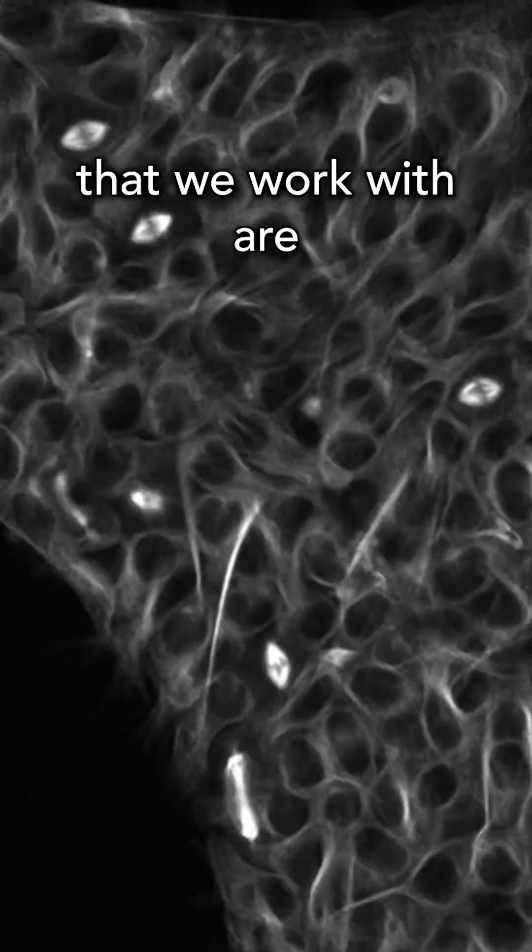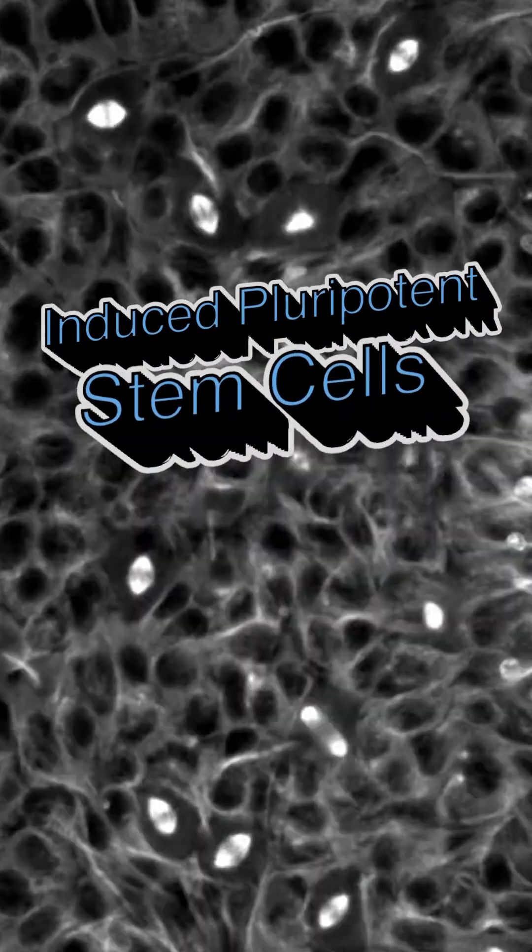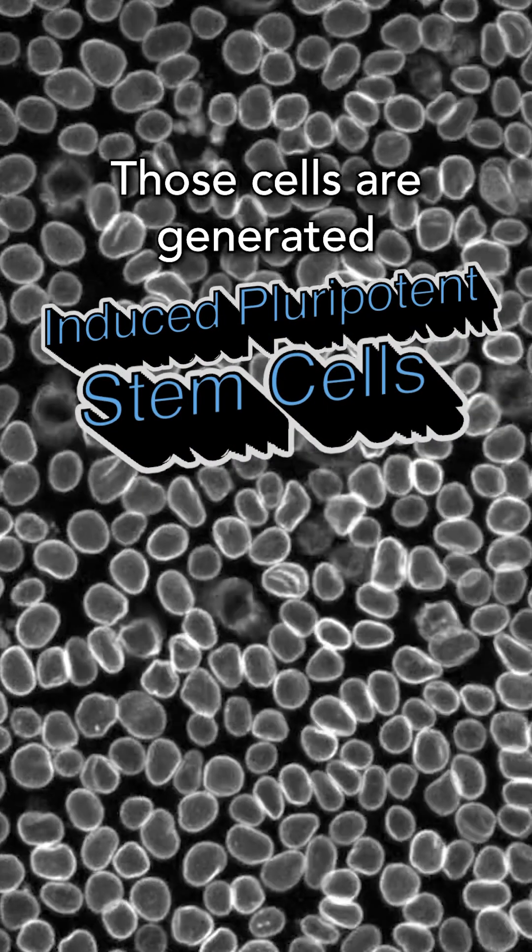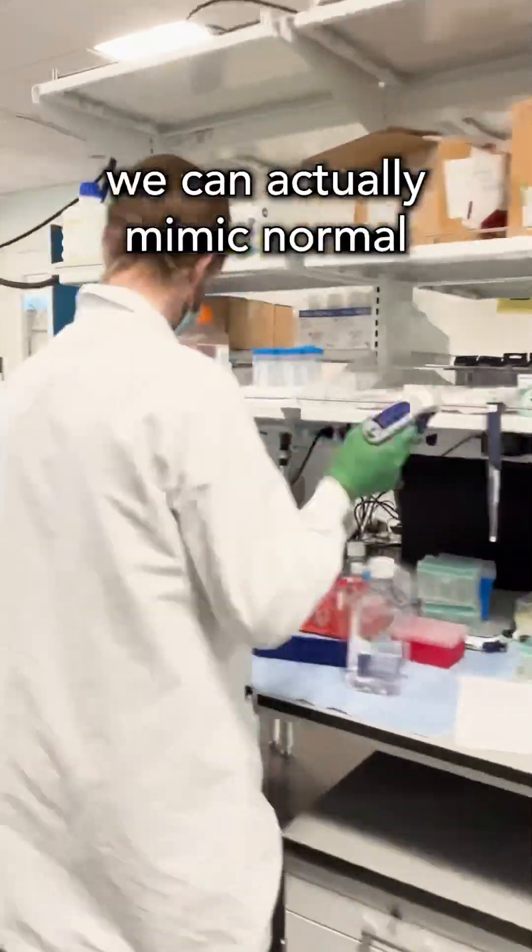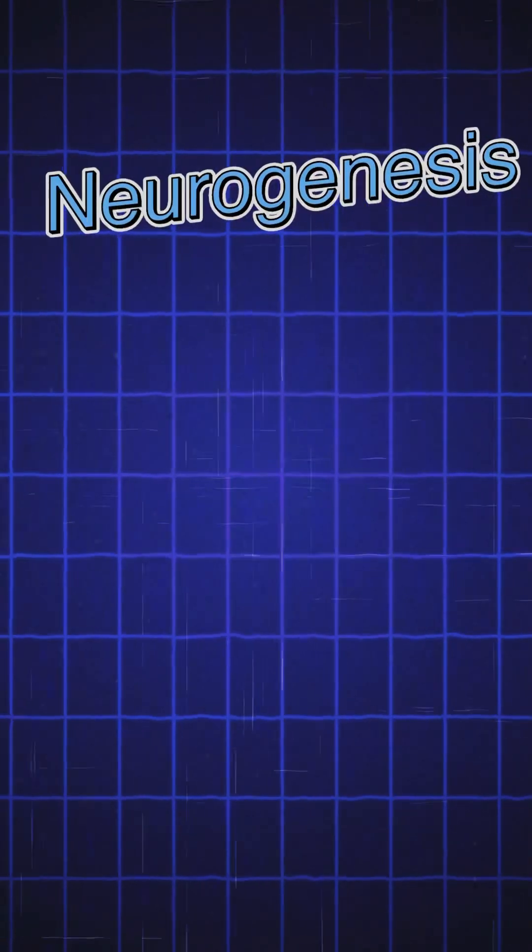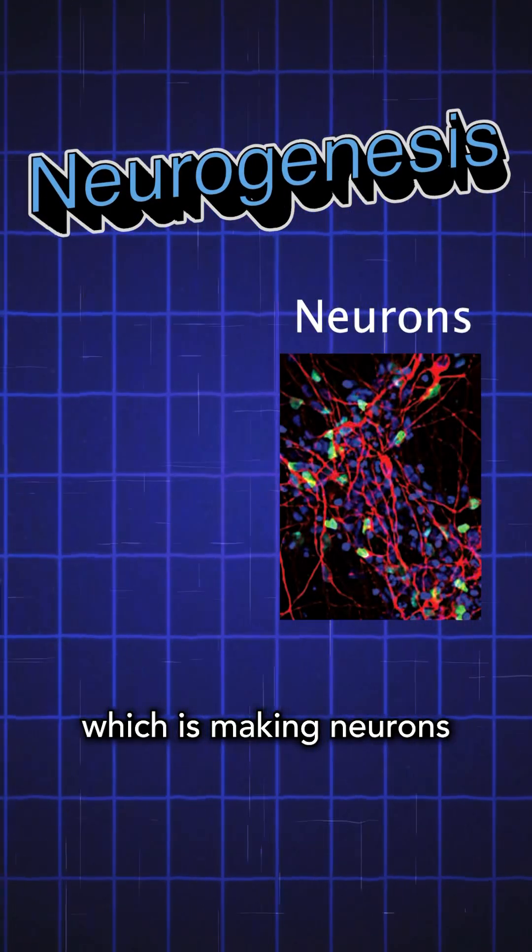The type of stem cells that we work with are induced pluripotent stem cells. Those cells are generated from adult skin or blood cells. In lab conditions, we can actually mimic normal neurogenesis, which is making neurons from stem cells.